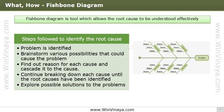Step two: identify the main causes contributing to the effect. For the main branches, you can use categories. For service industries, the eight P's are used: people, product, price, promotion, policies, processes, procedures, and place. For manufacturing industries, the six M's are used: manpower, method, measurement, machinery, material, and mother nature. You can also have customized categories.